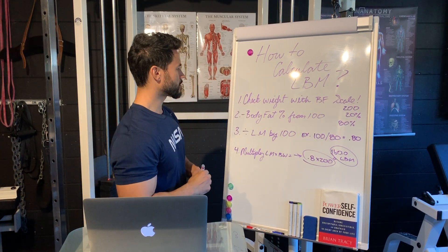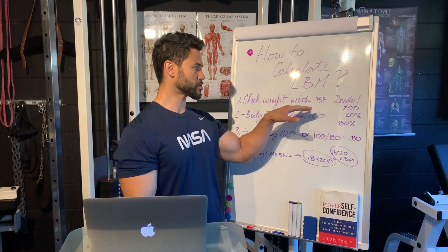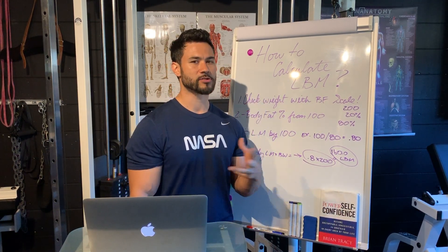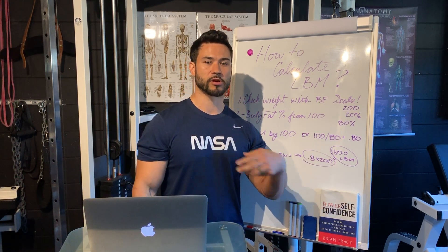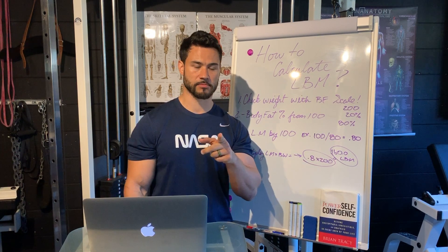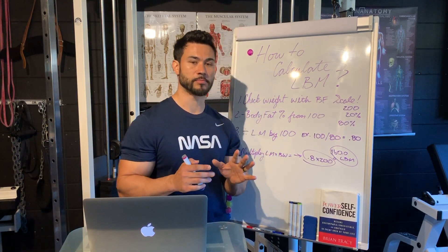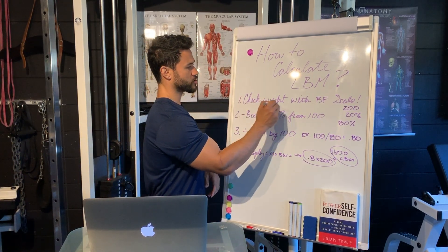Here we go — step one through four. First, you're going to need a body fat scale. A lot of the scales everybody's buying nowadays you can jump on, though whether they're 100% accurate is up for debate. Most are not, because many cofactors play a role in bioimpedance scales — essentially they send an electrical current through your body analyzing fluids and tissues. The more hydrated you are, the more accurate the scale will be over time. So fluid balance really does play a big role. Step one: check weight with a body fat scale.